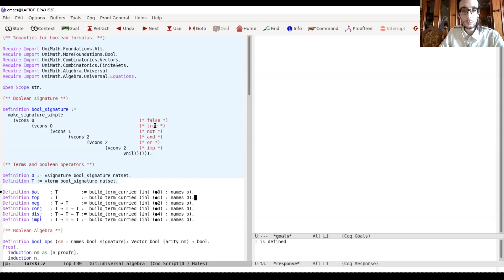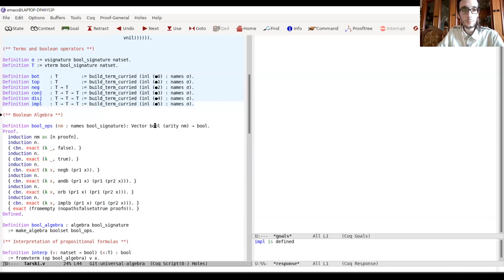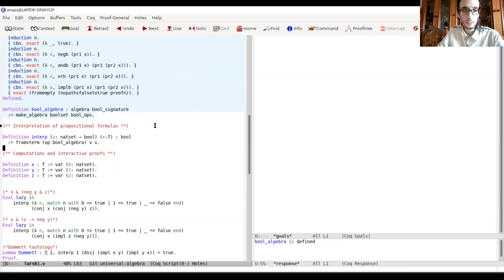And we can also define this set, the type of terms of this extended signature that represent formulas. And we can also define operations on formulas. So, we have a constant for bottom, a constant for top, negation, conjunction, disjunction, and implication. Next, we need the definition of Boolean algebra. So, we start a proof, an interactive proof environment to associate to each symbol of our signature an operation on the type of Booleans. And we can do that interactively, using the operations defined in the file MoreFoundations in UniMath. And now we have our Boolean algebra.